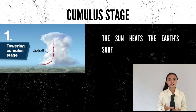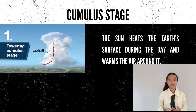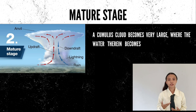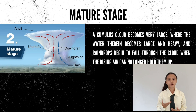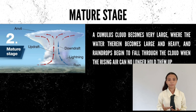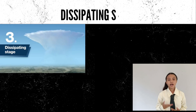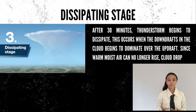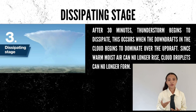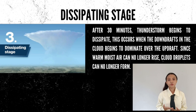In the cumulus stage, the sun warms the air around during the day. In the mature stage, a cumulus cloud becomes very large, where the water within becomes large and heavy, and raindrops begin to fall through the cloud when the rising air can no longer support the cloud. In the dissipating stage, after 30 minutes, thunderstorms begin to dissipate, where downdrafts in the cloud begin to dominate over the updrafts. Since warm moist air can no longer rise, cloud growth can no longer occur.